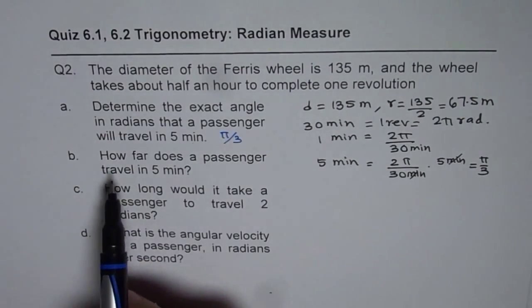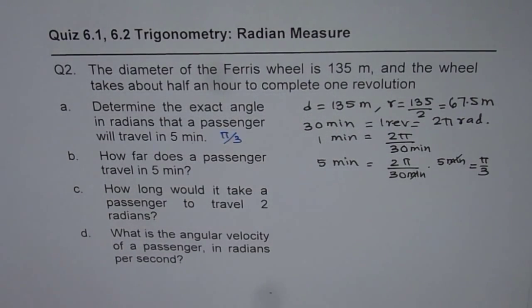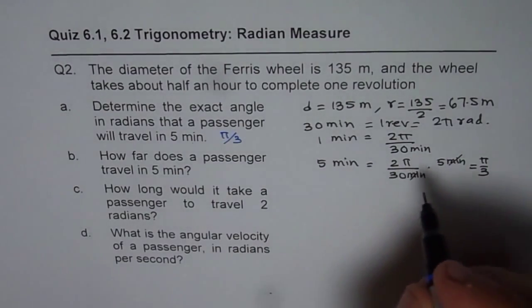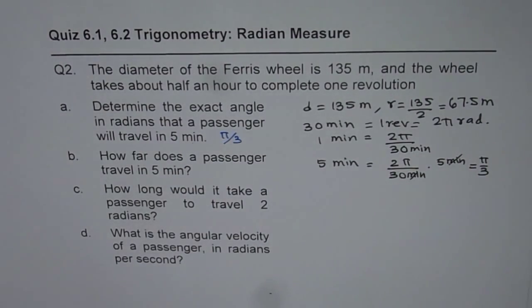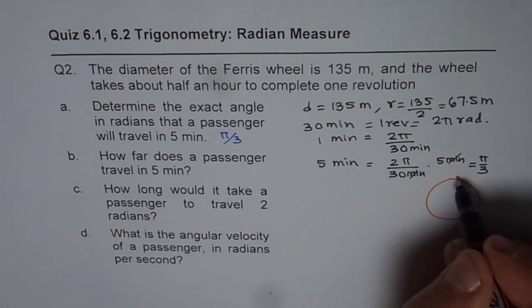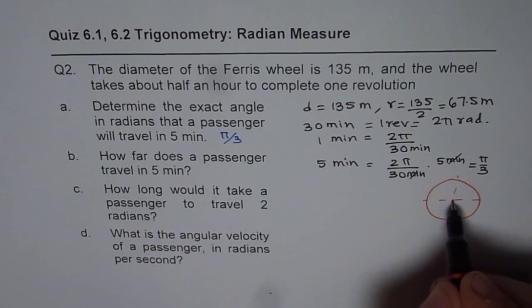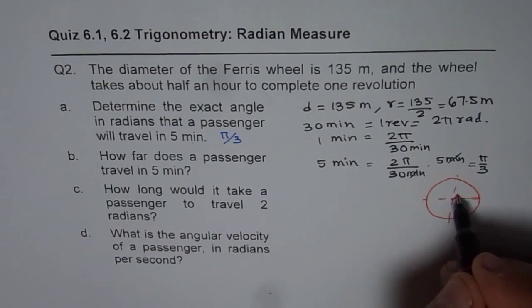Now the next part is how far does a passenger travel in five minutes? So basically we have a Ferris wheel. Let me sketch it. As we have seen in this case, in five minutes they travel π by 3. That much portion.